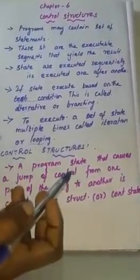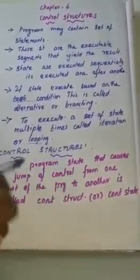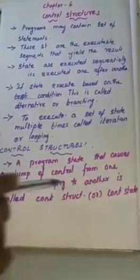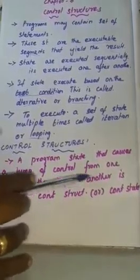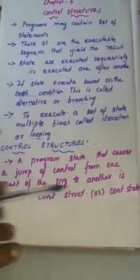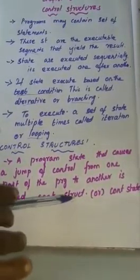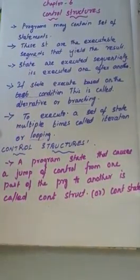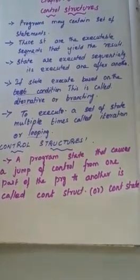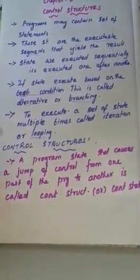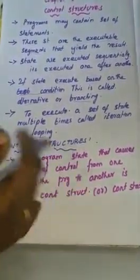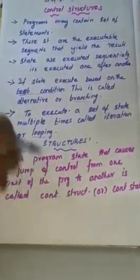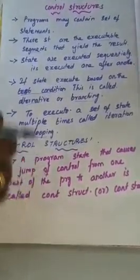What is a control structure? A program statement that causes a jump of control from one part of your program to another part of your program — where control can be passed or jumped from one part to another — is called a control structure or control statement.